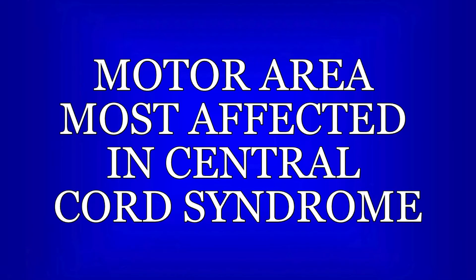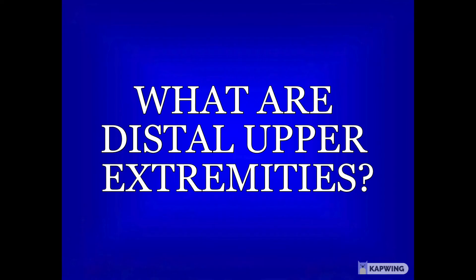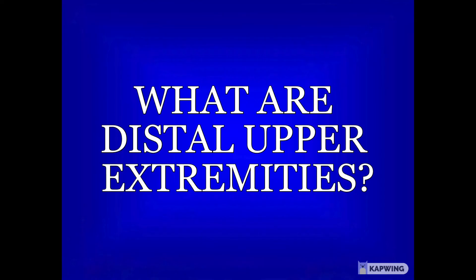Now it's time for NPTE Jeopardy! Pause the video now if you want time to read and think about the question. Otherwise, you've got five, four, three, two, one. The corticospinal tract is arranged with the upper body closest to the center of the spinal cord, like the spinothalamic tract, and unlike the dorsal columns. Central cord syndrome affects the center of the spinal cord first, with decreasing symptoms more laterally.